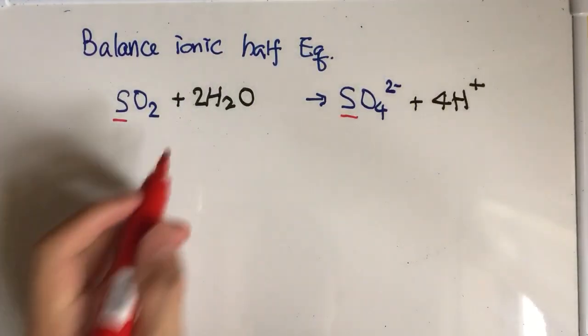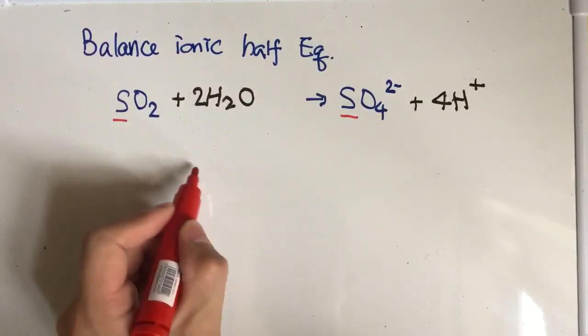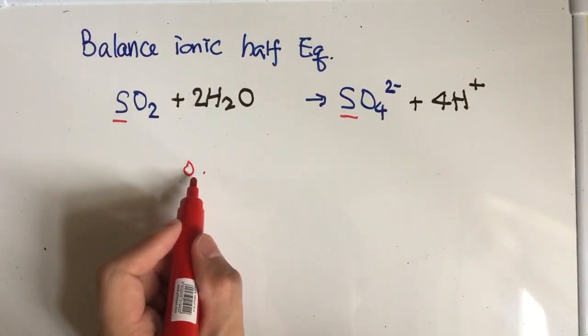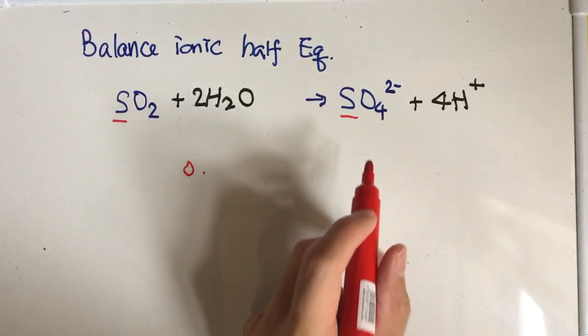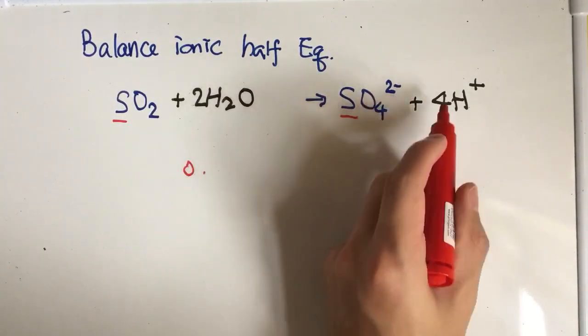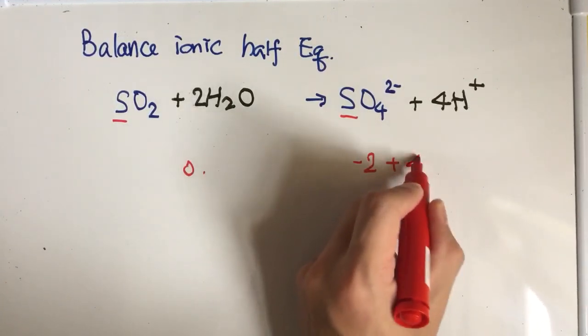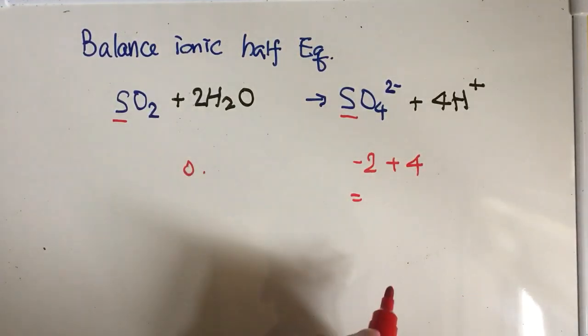After this, you have to balance the charge. On the reactant side, there is zero charge - they're neutral. But on the product side, there is 2- and 4+. So -2 + 4, which is actually equal to +2.